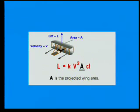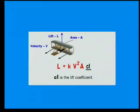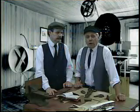A is the projected area of the wing surface. Projected area is the area you would see if you were looking down on the surface from above. The final factor is Cl, the lift coefficient. This is a complex factor that includes a number of variables, such as the shape of the wing and the angle of attack. It's usually determined experimentally.